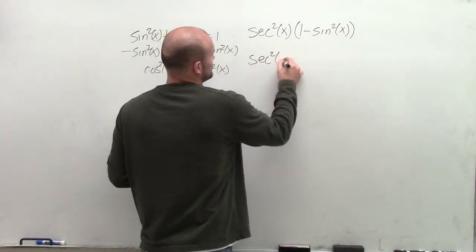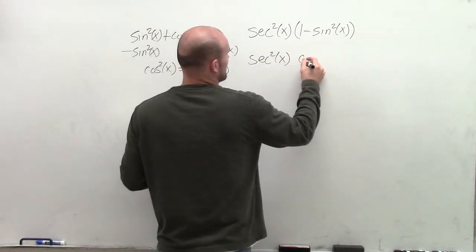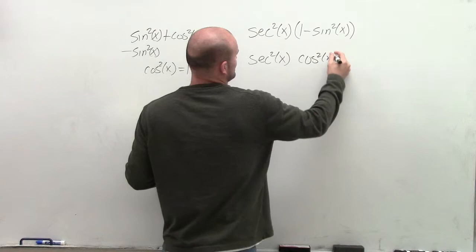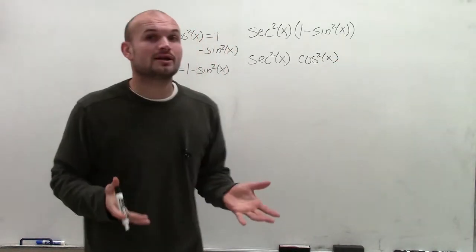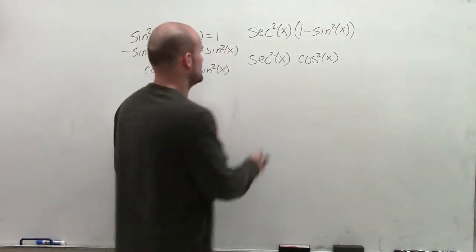So therefore, I have secant squared of x times the cosine squared of x. And then, lastly, what I'm going to want to do is use my reciprocal identities.